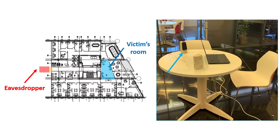We performed the Glowworm Attack against a target office containing speakers connected to a computer. We used a telescope located 35 meters away from the office to direct an electro-optical sensor at the speaker's power indicator LED. As can be seen in the picture, the monitor cannot be seen by the eavesdropper, and only the power indicator LED of the speakers is visible. We played two sine waves from the speakers.